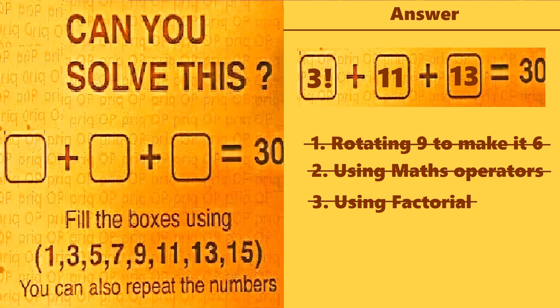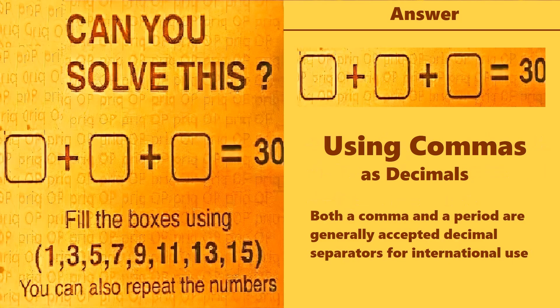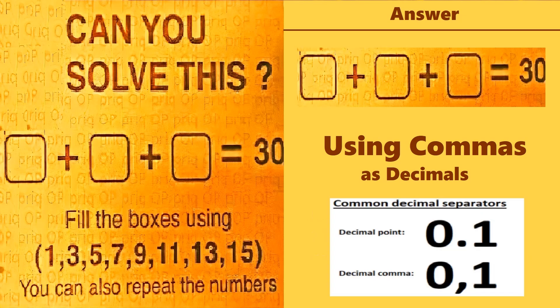What could be the best solution to this puzzle? That is using commas. In the international system, both a comma and a period are generally accepted decimal separators for international use. So we can use these commas if we have common decimal separators. We have decimal point, which can be used as a decimal, and we can use the comma as a decimal.